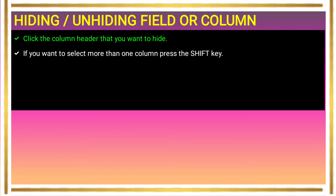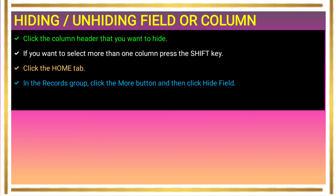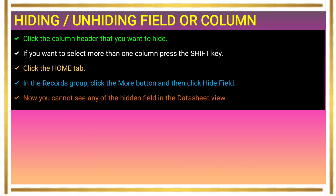If you want to select more than one column, press the Shift key to select multiple fields. Then click the Home tab. In the Record group, click the More button, then click the Hide Field option. From the drop-down list, select the Hide Field option. The selected field will no longer be visible in the Datasheet View.